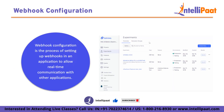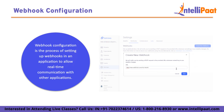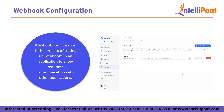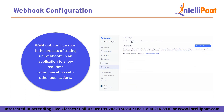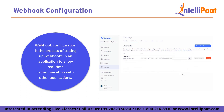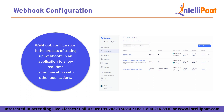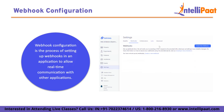Now we will look at webhook configuration. Webhook configuration is the process of setting up webhooks in an application to allow real-time communication with other applications. The configuration process varies depending on the application and the type of event being triggered, but there are some common steps to follow. The first step is to determine which events will trigger the webhook — this could include events such as a new user signing up for a service, a payment being made, or a product being added to a shopping cart. Once the events have been identified, the application needs to provide a way for users to register their webhook endpoint URL.